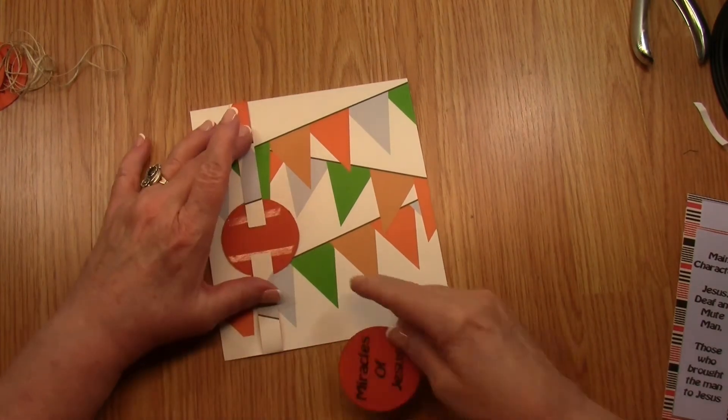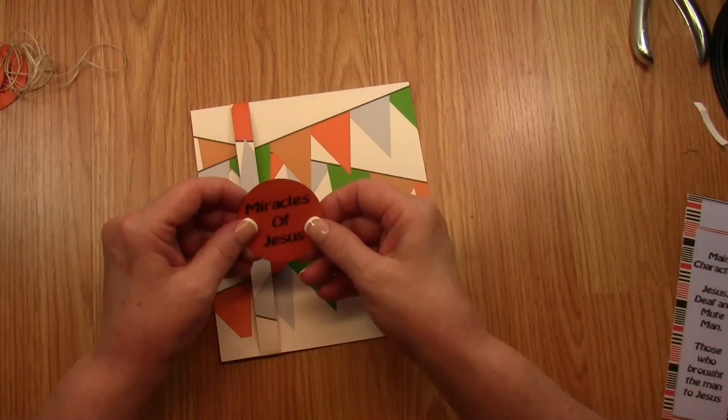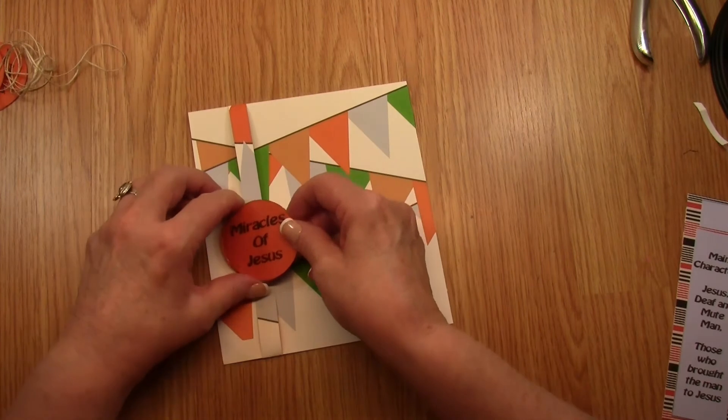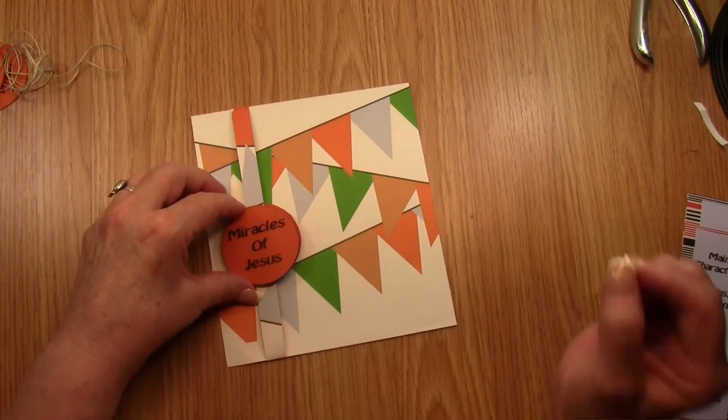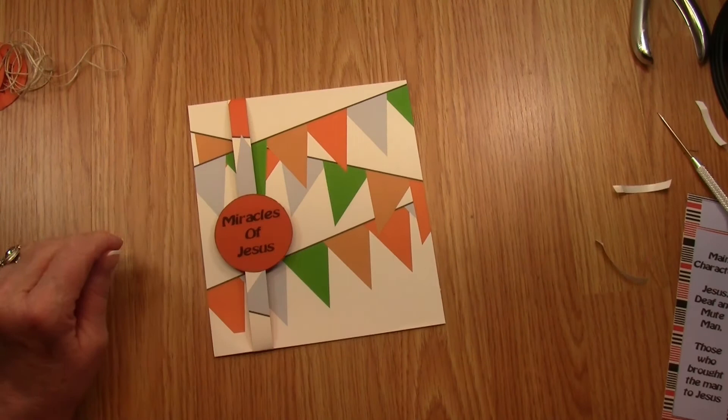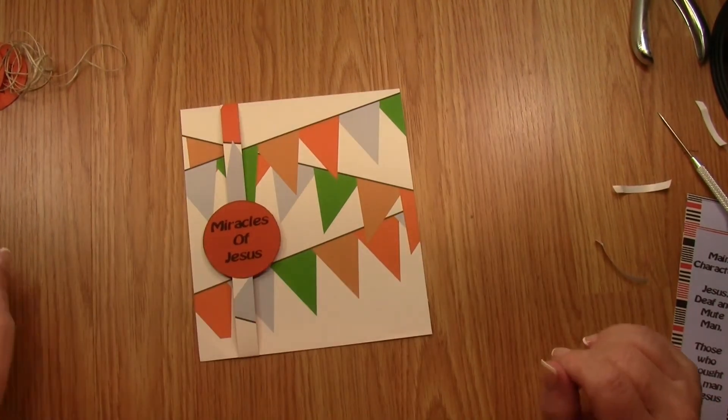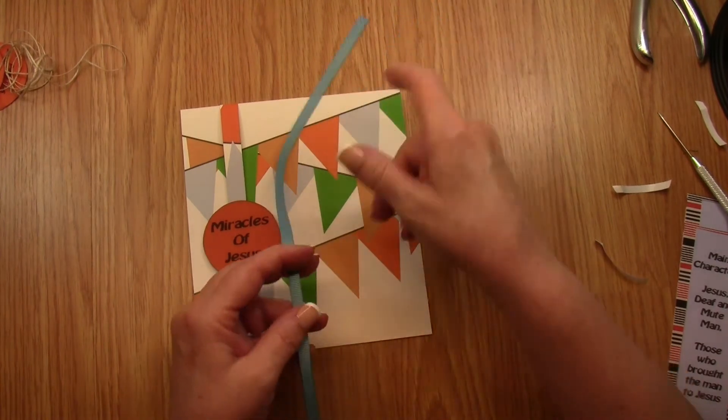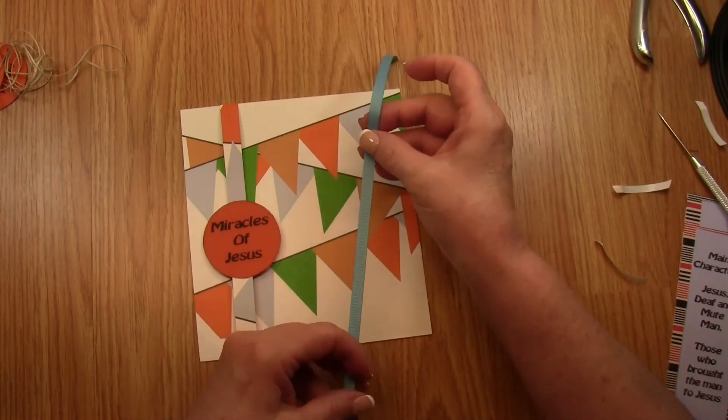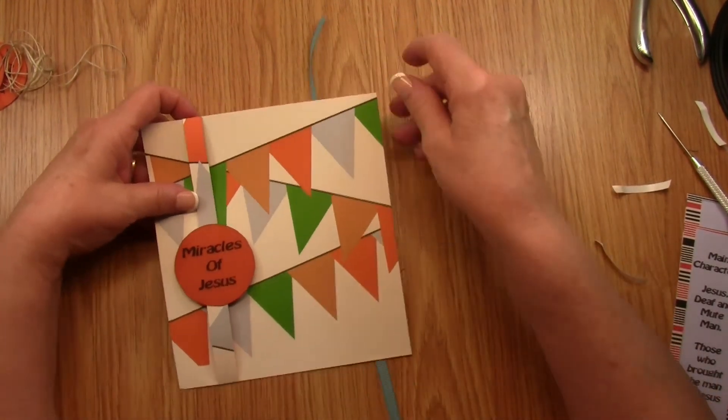After attaching our circle to our strip, we're going to place our Miracles of Jesus and we're going to stick it on top of the other circle, and you will do this with all the rest of the circles. Now let's do the one that is exactly like the example in the instructions, and what we're going to do is we're going to place it just like we did the paper.